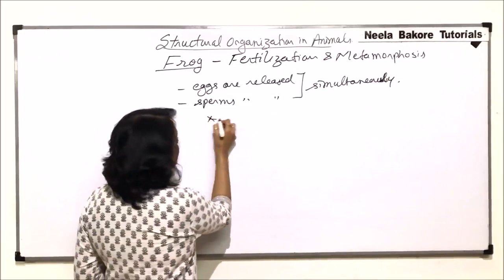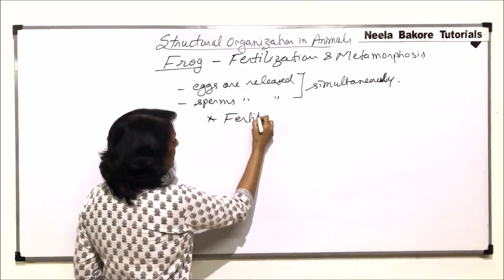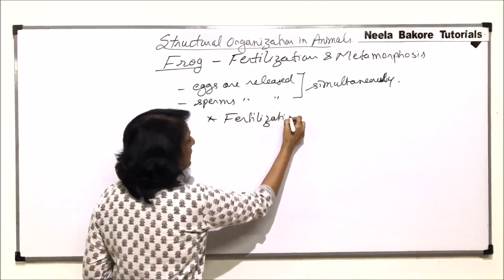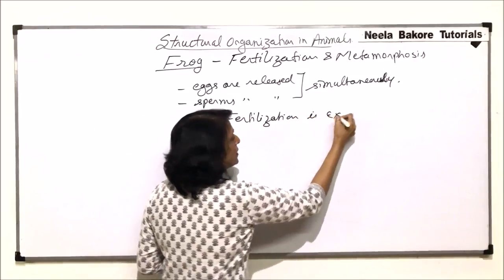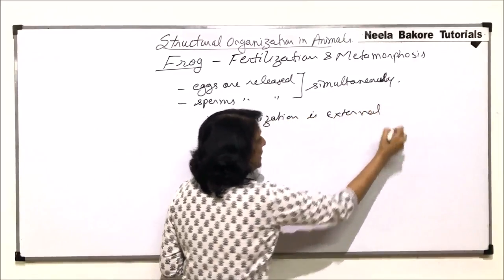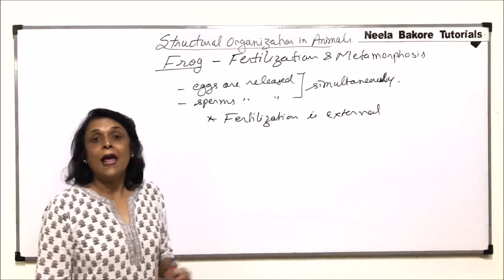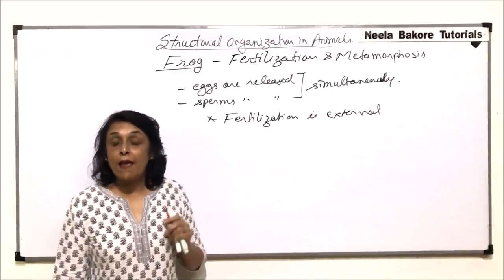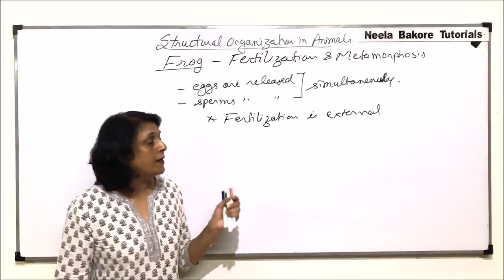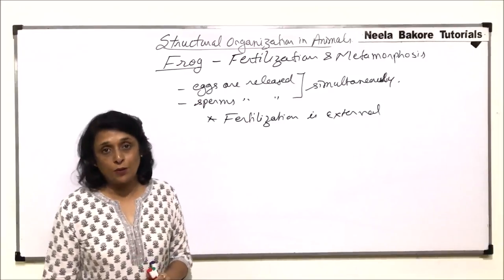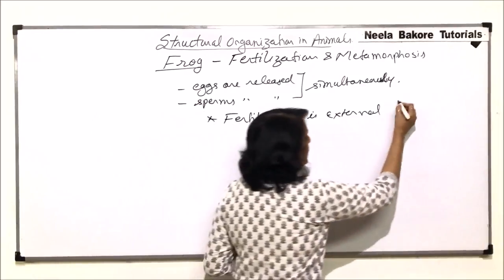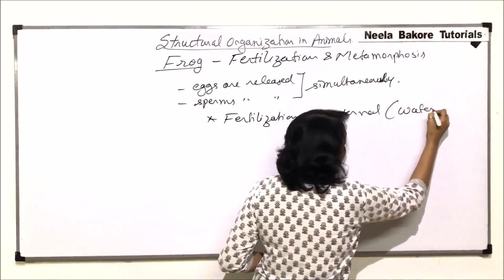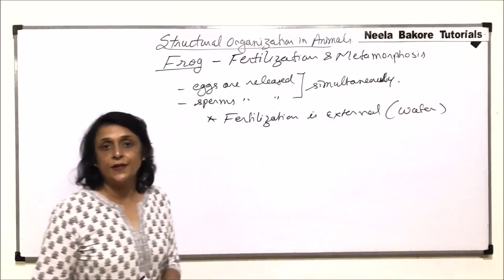And that means fertilization is external. It takes place in the water. And that is why we said that these animals are termed as amphibians, because they depend on water for reproduction. So fertilization takes place in water, that is, it is external fertilization.